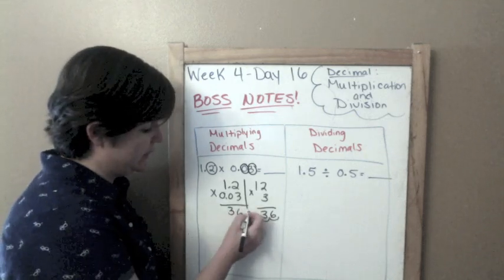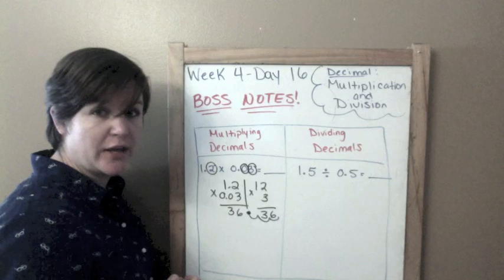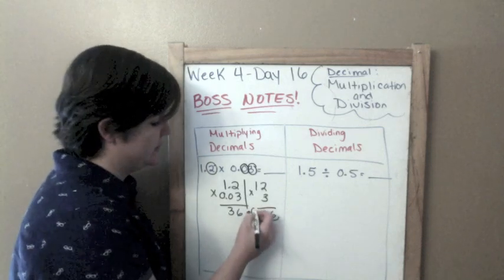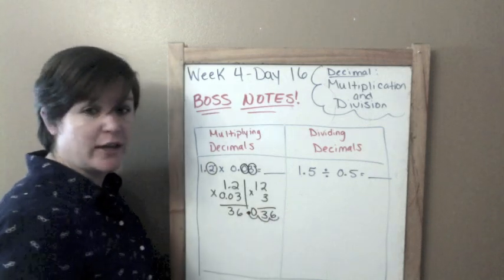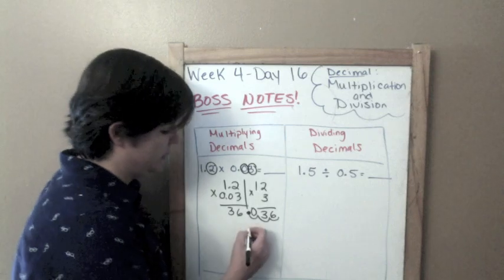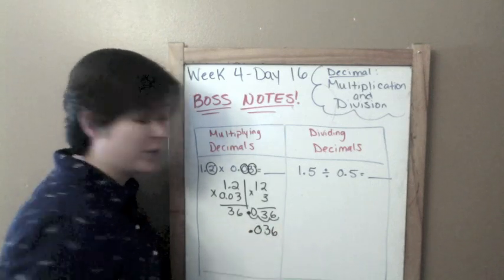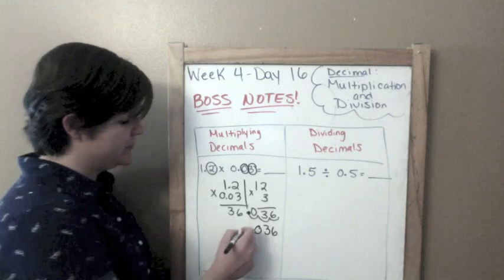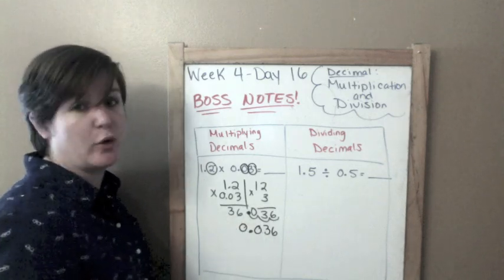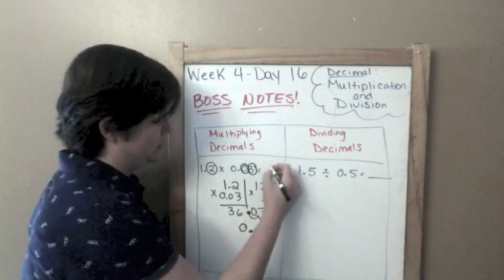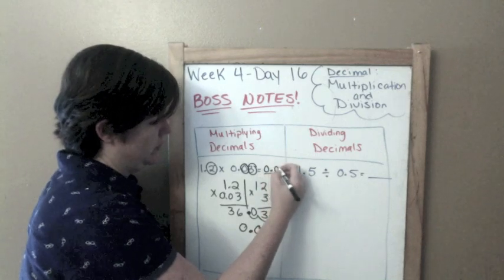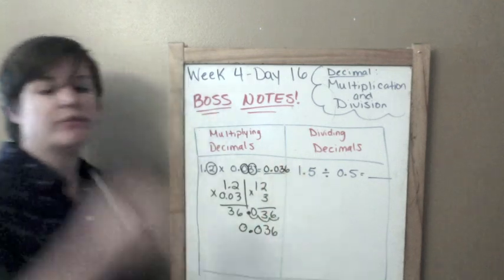Let me move that so you can see it right here. And then you put a 0 in that extra space. So this is what it would look like. 0.036 or 36 thousandths. So you could even put a 0 right there to hold that 1's place, which I like to do. 0.036.